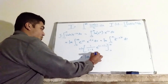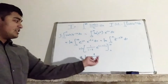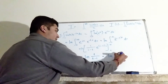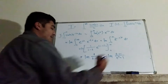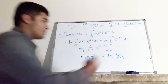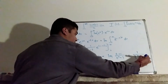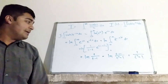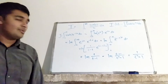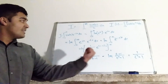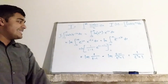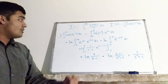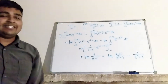Multiplying top and bottom by the complex conjugate gives the imaginary part of (t plus i) all over (t squared plus 1), which is precisely 1 over (t squared plus 1). So J equals 1 over (t squared plus 1). As a bonus, the integral of cos(x) times e to the negative tx is the real part, giving t over (t squared plus 1).